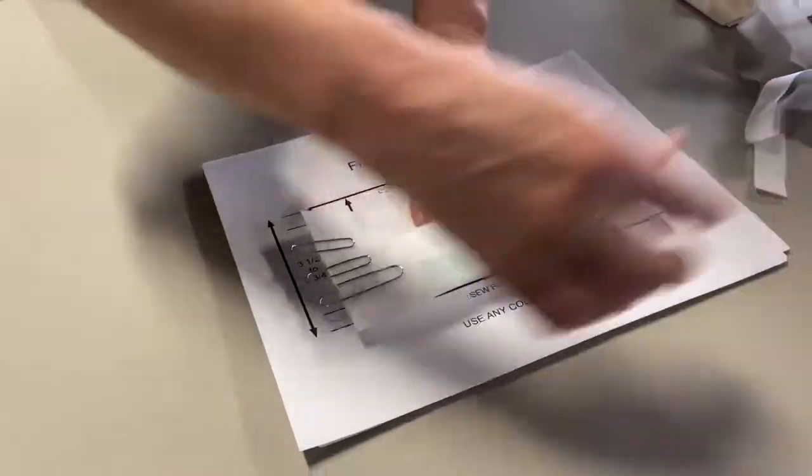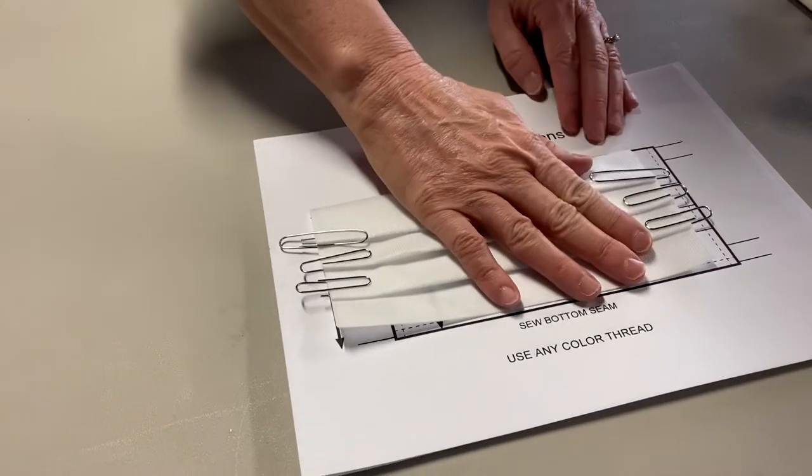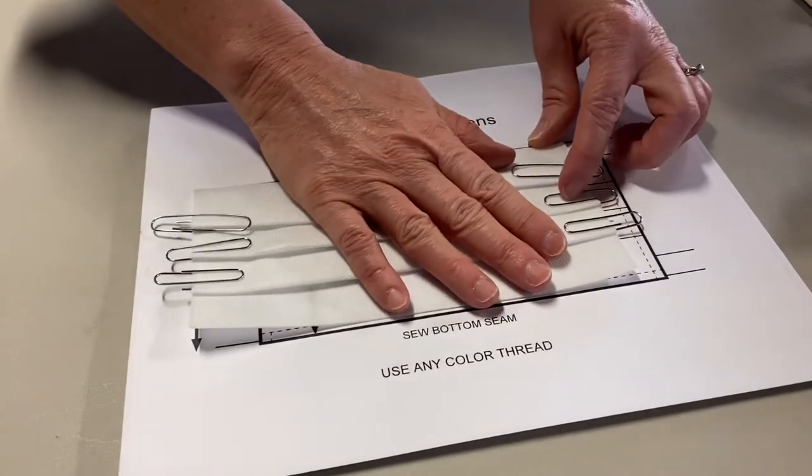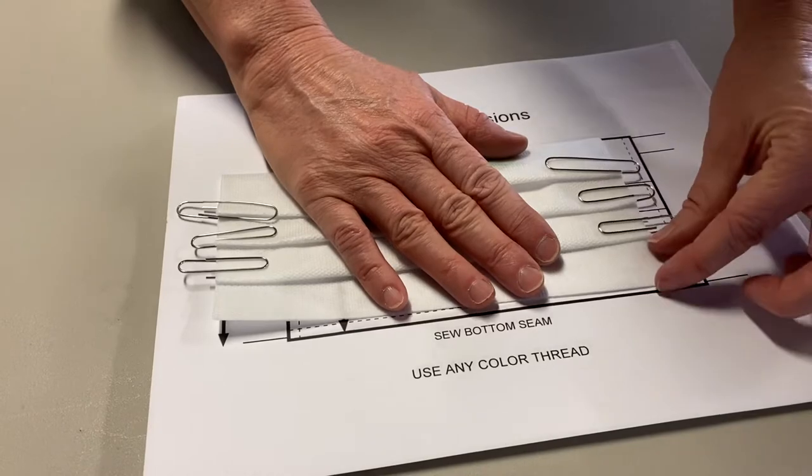And then after I have paper clipped it all together, I turn it around, put it on my pattern to see if it fits. And you can see that the first fold is one and a quarter inch, the bottom is an inch.